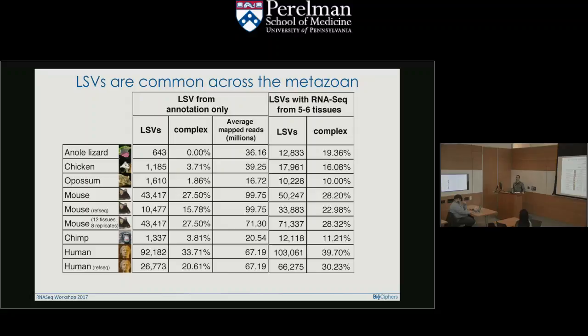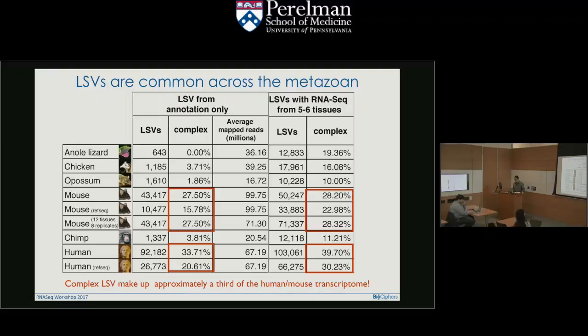The average length of a human exon is about 145–147 bases, and reads are now 100 bases long, so the numbers make sense. The numbers don't correspond to phylogenetic distance — they correspond to how well that genome has been annotated and studied. The bottom line: complex LSVs are very common and you probably don't want to neglect them.